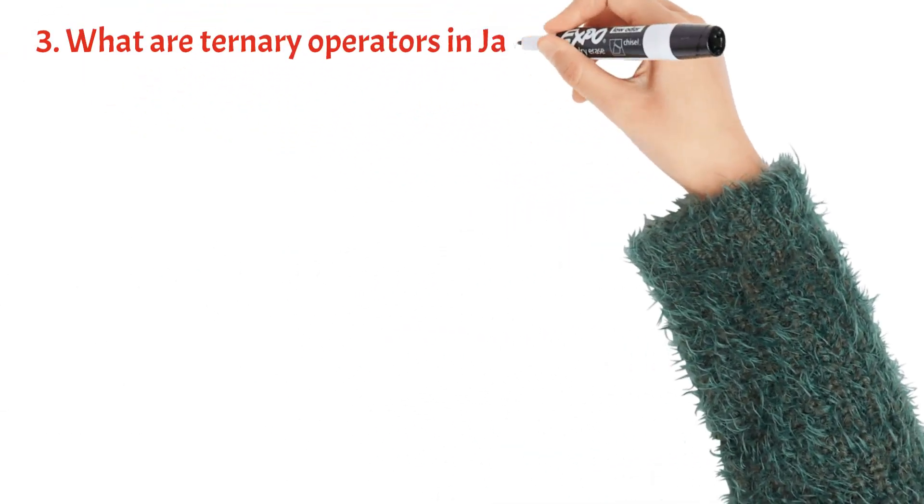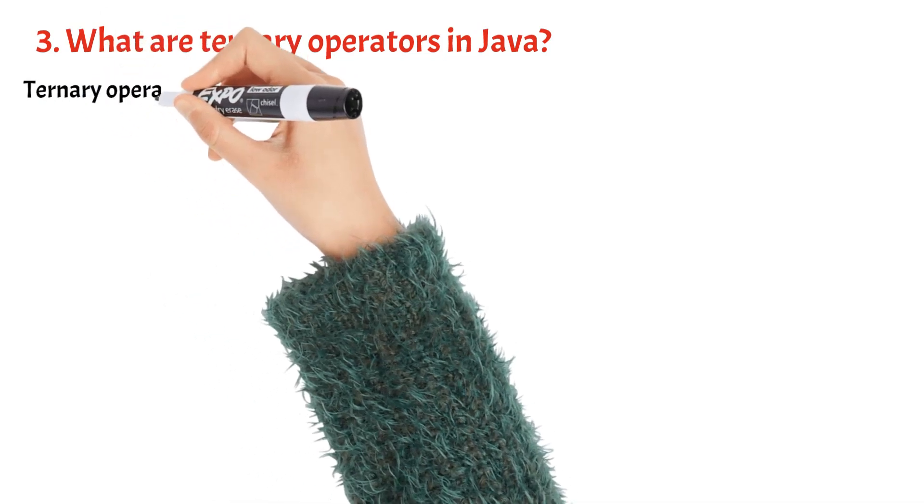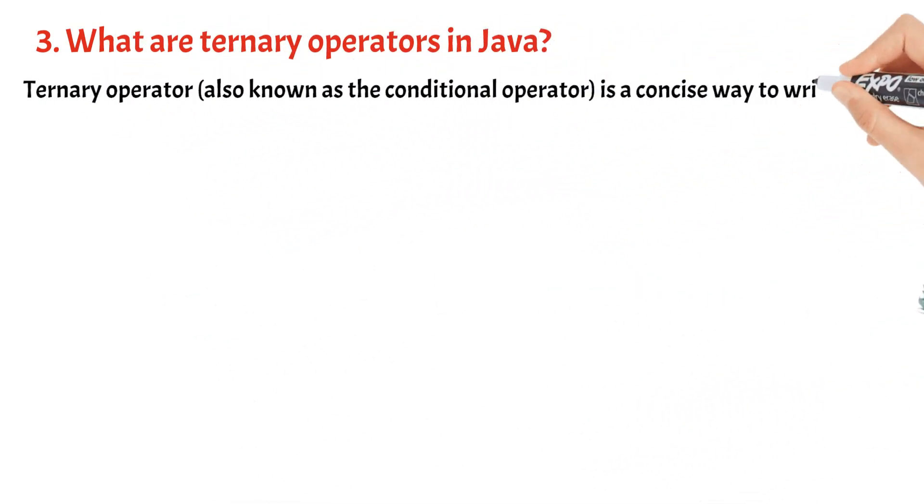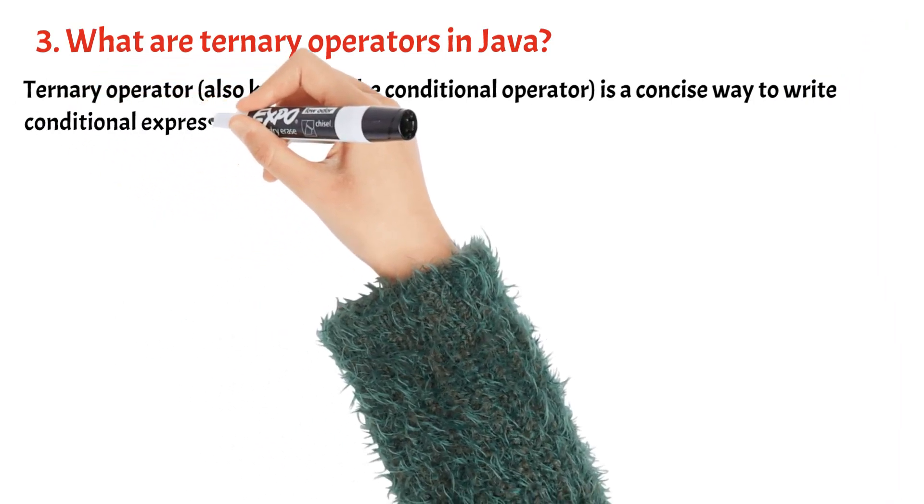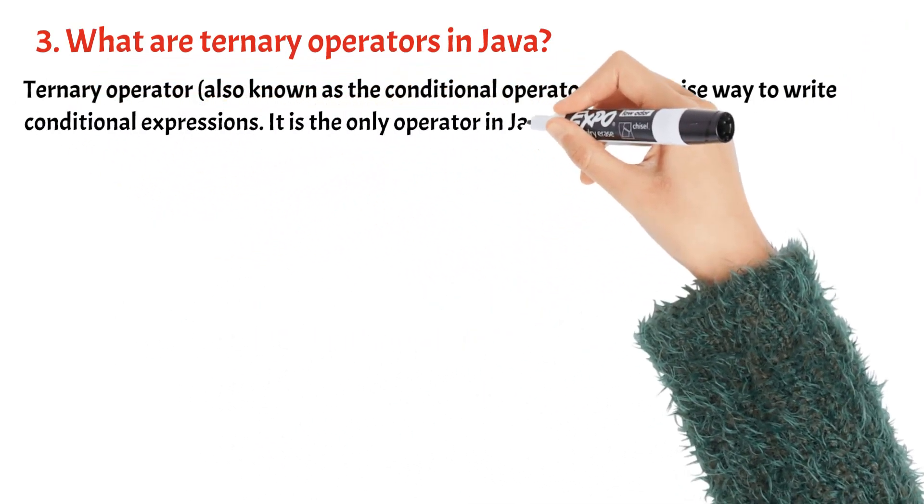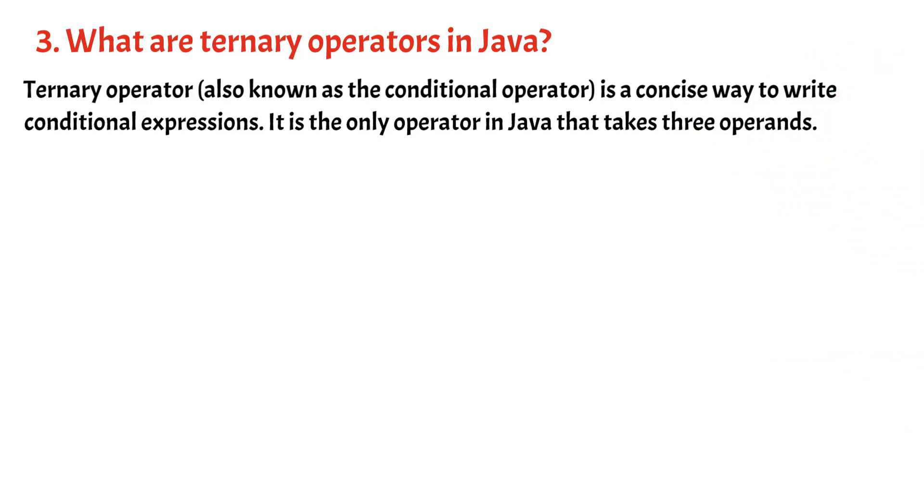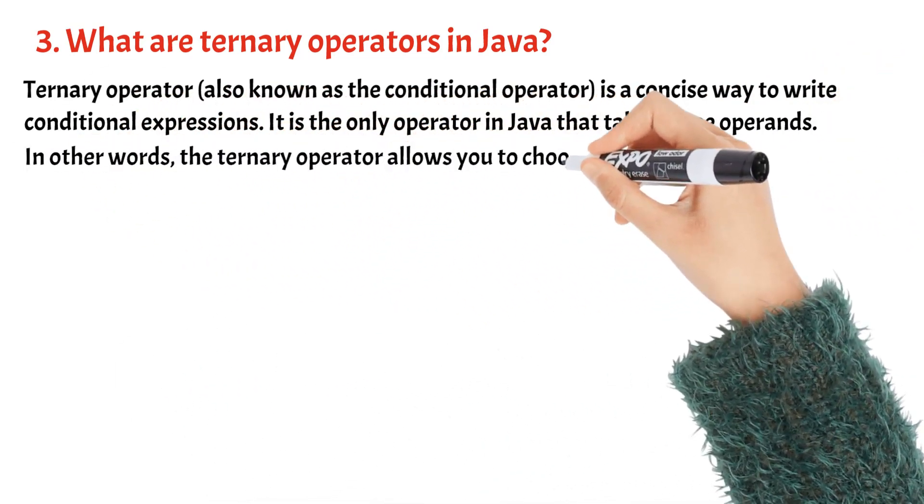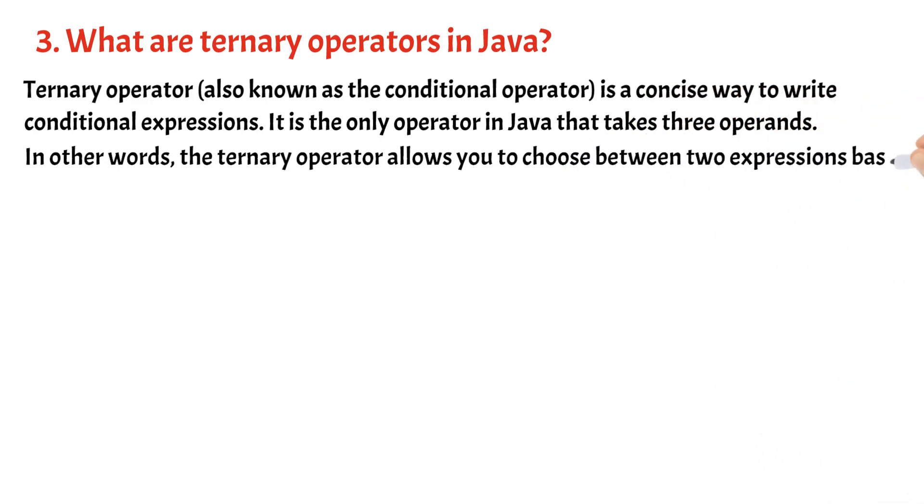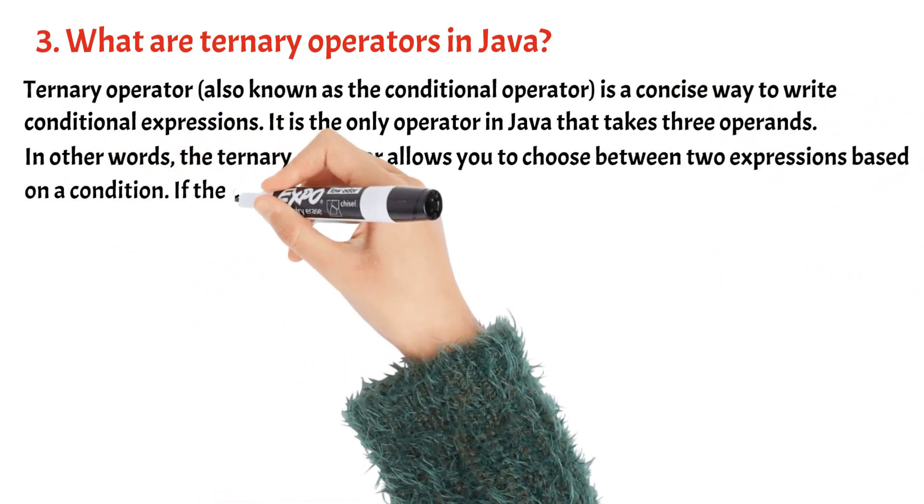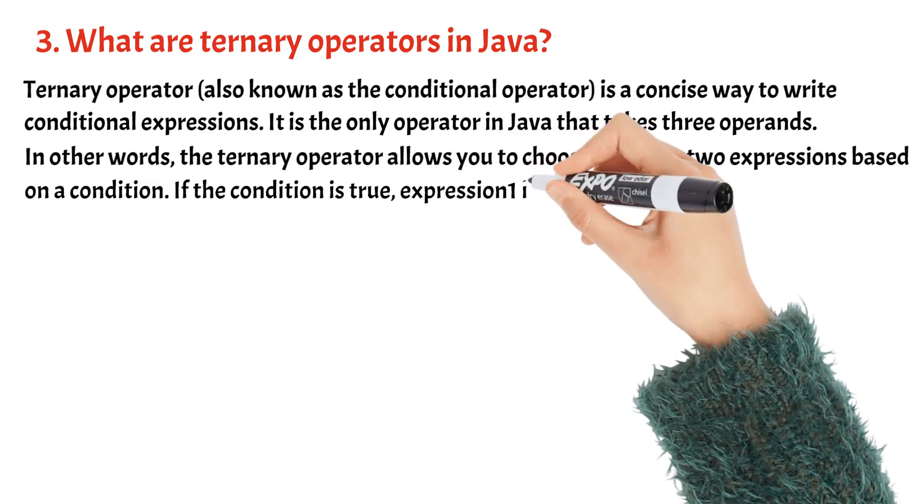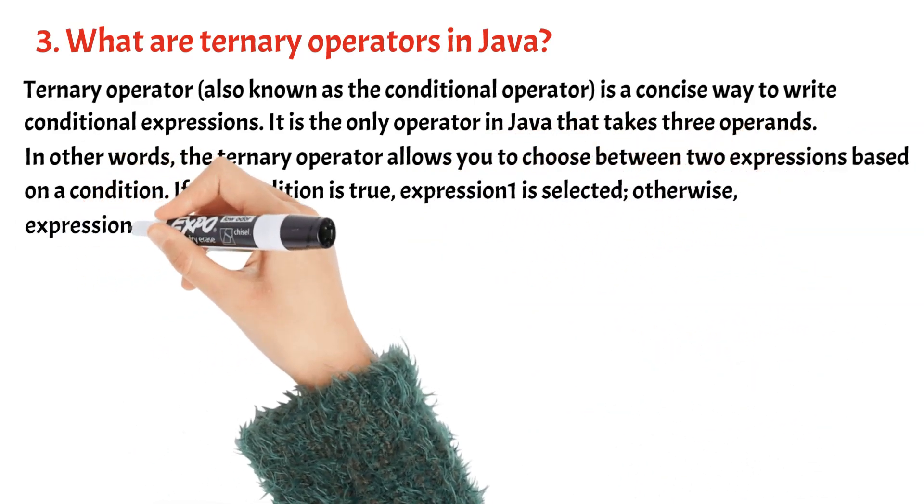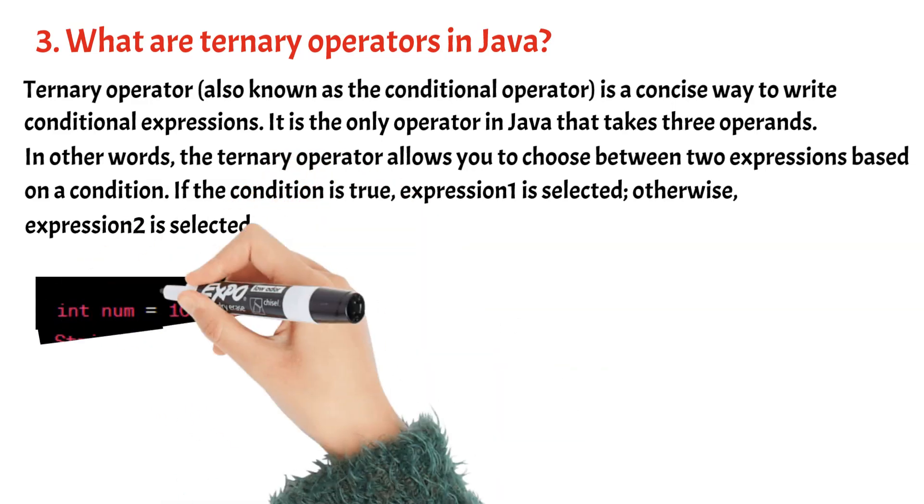What are ternary operators in Java? Ternary operator, also known as the conditional operator, is a concise way to write conditional expressions. It is the only operator in Java that takes three operands. In other words, the ternary operator allows you to choose between two expressions based on a condition. If the condition is true, expression1 is selected, otherwise expression2 is selected.